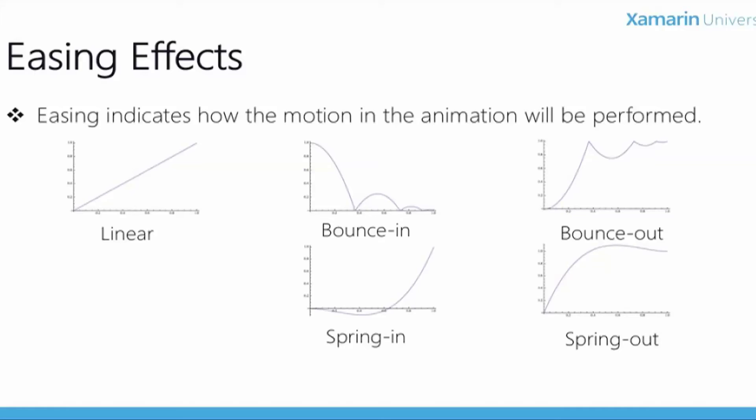The choice of easing animation is ultimately up to you. Keep in mind that the easings shown are the predefined ones — they are not fixed. You can create your own by instantiating a new easing class and passing in a function.